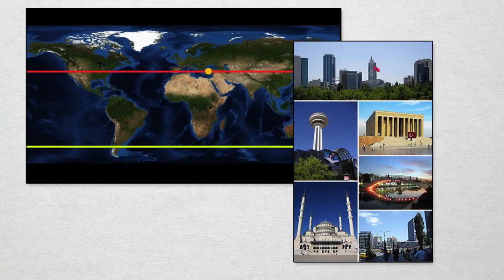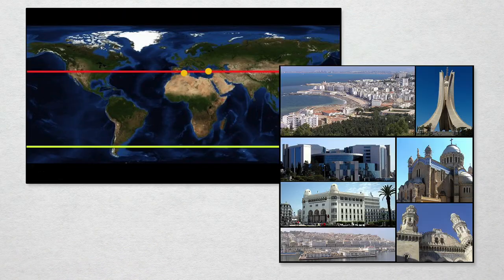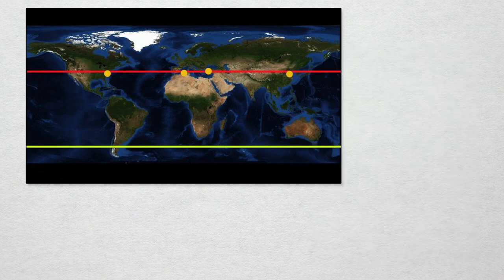If this were Earth, cities like Ankara, Beijing, Algiers, and Washington DC would be considered tropical.